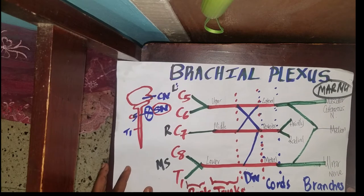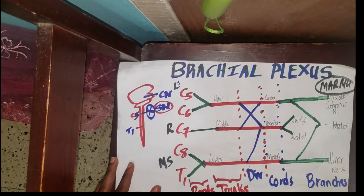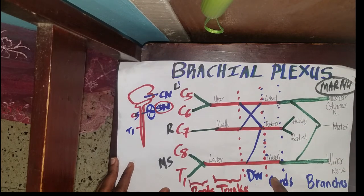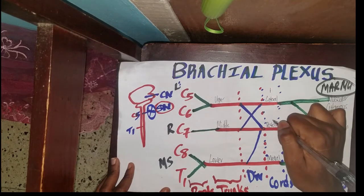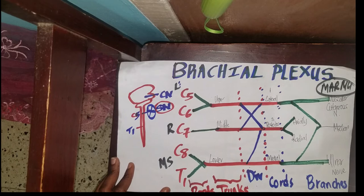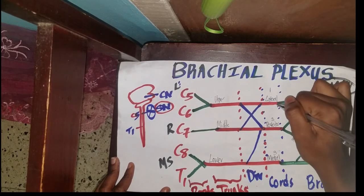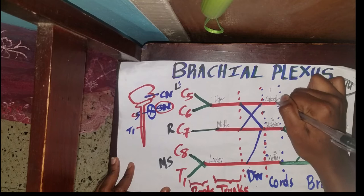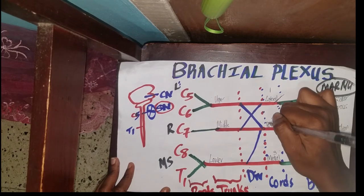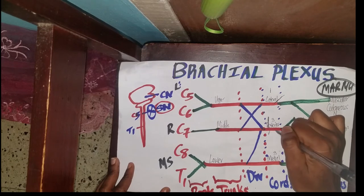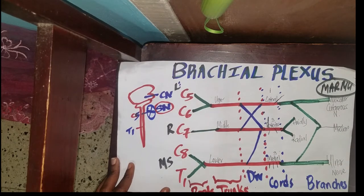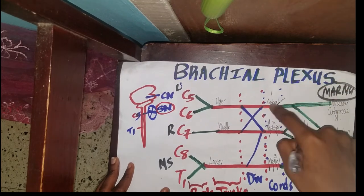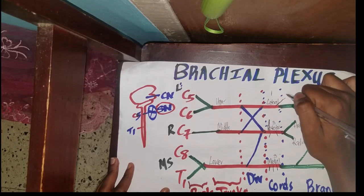Now let's talk about the different nerves given off at different places. Starting with the cords, I remember them by a one-three-three rule: one nerve given off from the lateral cord, three from the posterior cord, and three from the medial cord. The one given off at the lateral cord is the lateral pectoral nerve.